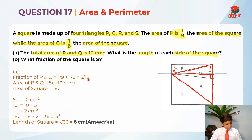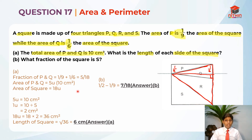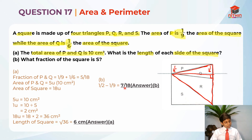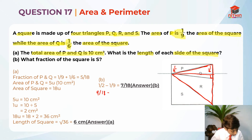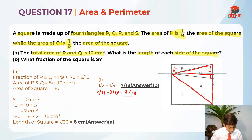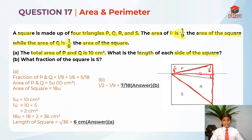Half of the square is 9/18. Since P plus S equals half the square, and P is 1/9 (which is 2/18), we take half minus 1/9, which gives us 7/18. Or equivalently, 9/18 minus 2/18 equals 7/18. So 7/18 is the answer for Part B. If P plus S is half, we subtract P (which is 1/9) to get S = 7/18.